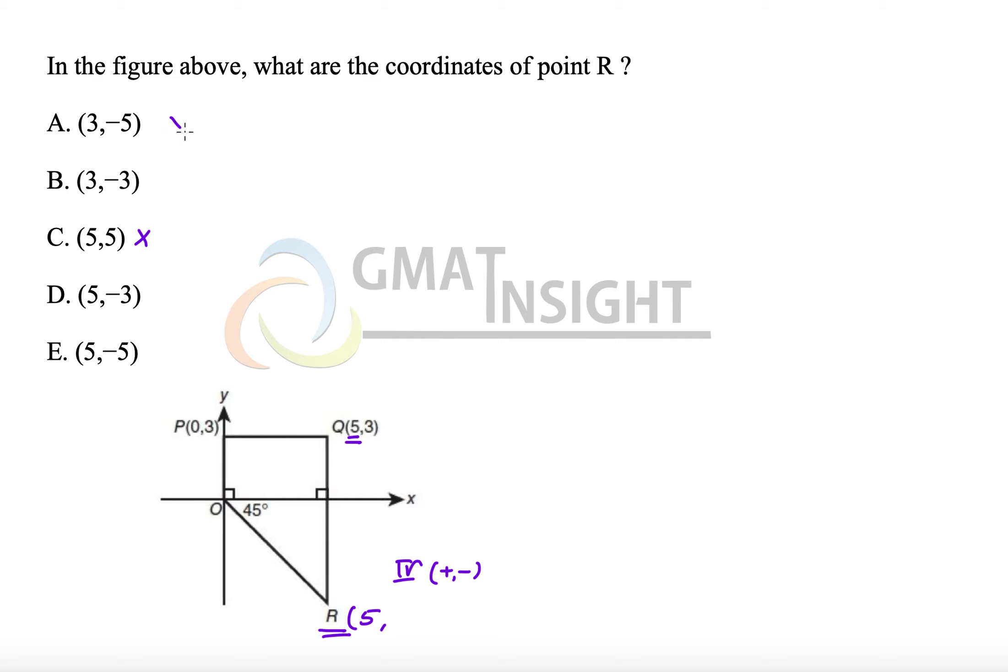That means it eliminates option A and option B because the x coordinates here are 3 and now we are left with only two options D and E.